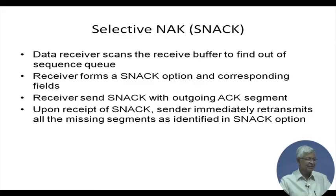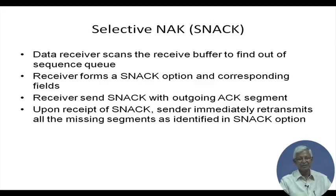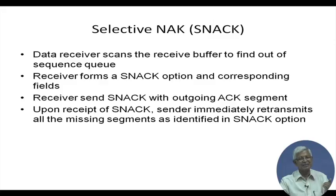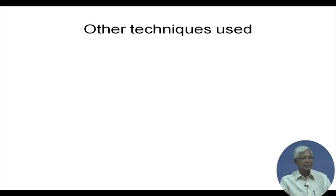Upon receipt of the SNACK, the sender immediately retransmits all missing segments as identified by the SNACK option. The sender knows which sequences are missing and places them into a new queue — this is not the standard sliding window arrangement. The missing segments form a new queue and the sender tries to fill up the network capacity accordingly.